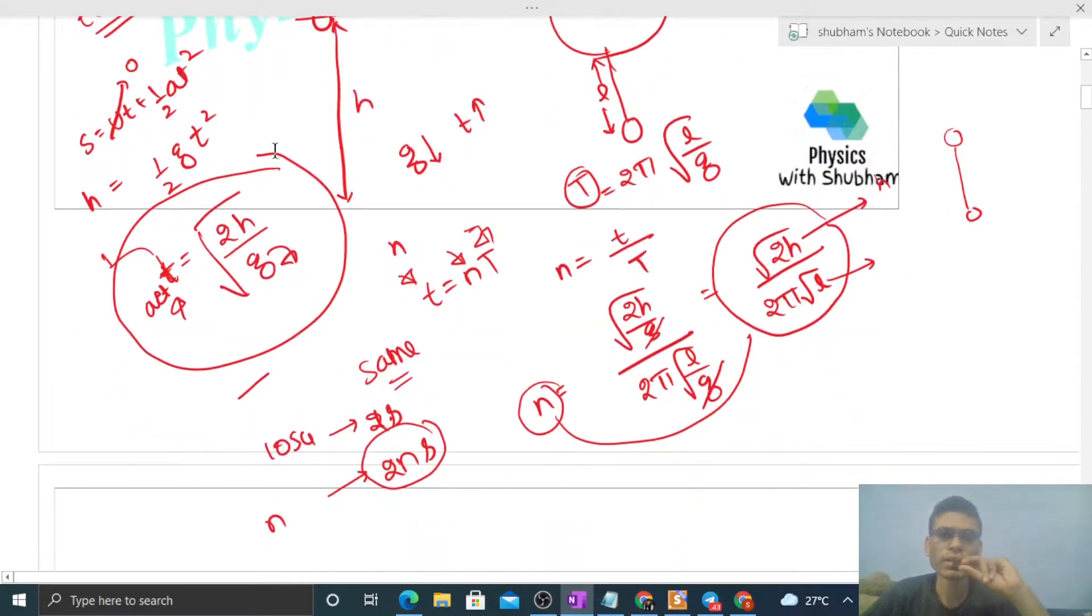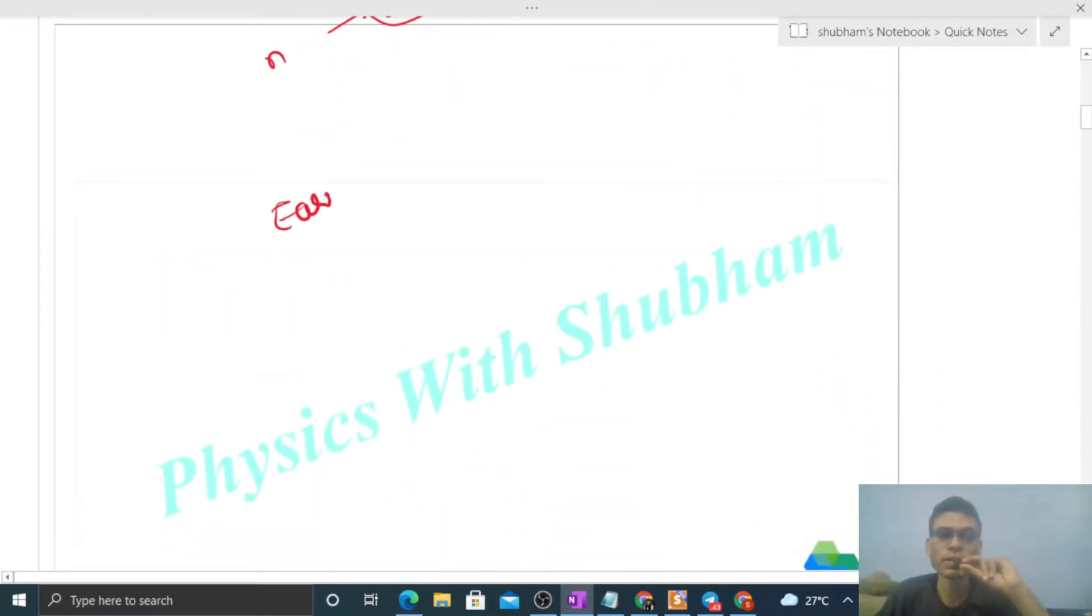Actually kya hota hai na ki jab hum earth se moon pe shift honge, so jitna distance is object ko niche jana hai woh toh fix hai. Earth ke surface pe kya hai ki speed agar v hai, so moon ki surface pe speed decrease ho jayega. But, but jo time hai, jo measured time hai woh same rahega. Kya? Because jo clock hai na woh dhire dhire move karegi, like jo time hai woh slow ho jayega is clock mein jab hum is clock ko moon pe le jayenge.